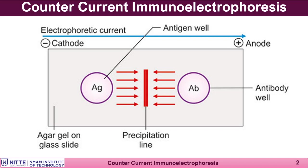Depending on the concentration of the antigen and the antibody: if the concentration of both is equal, the precipitin band will appear exactly in the centre between the two wells. If the concentration of antibody is higher than antigen, the precipitin band will be pushed towards the antigen side well. If the concentration of antigen is higher than antibody, the band will be pushed towards the antibody side. However, if concentration is abnormally high, no precipitin band will appear.